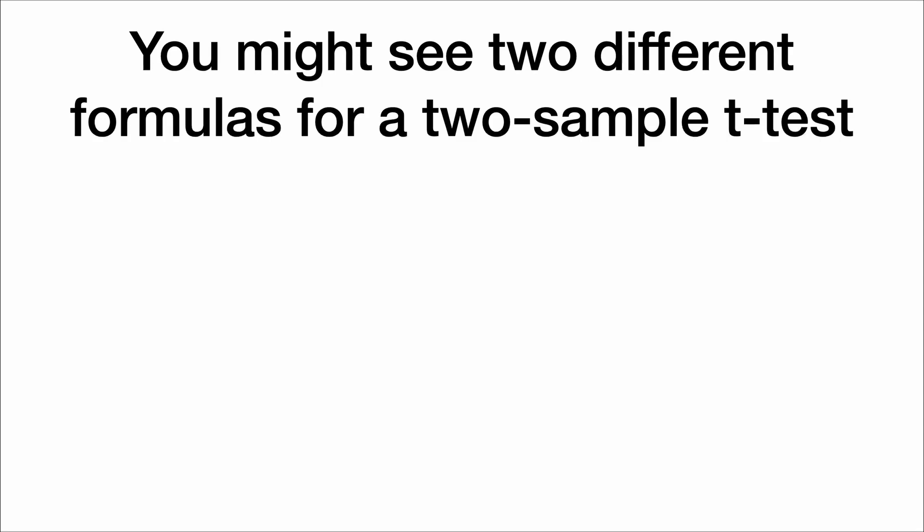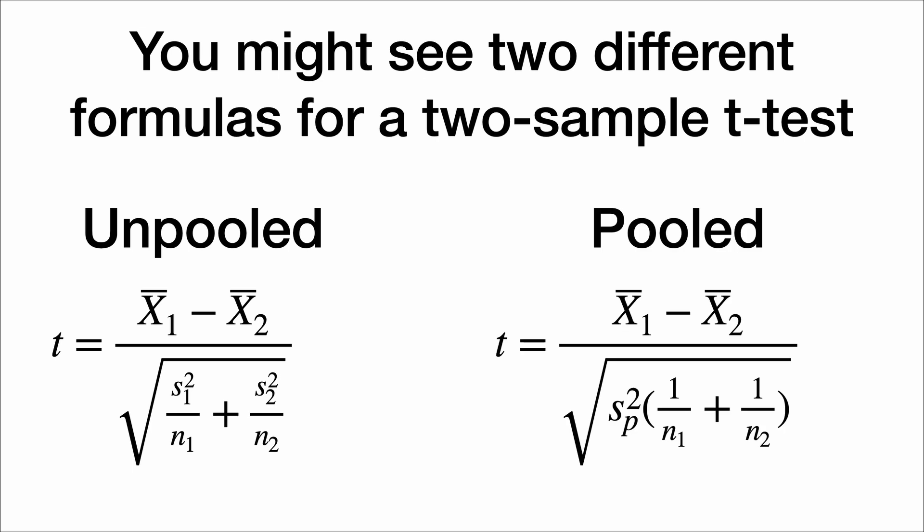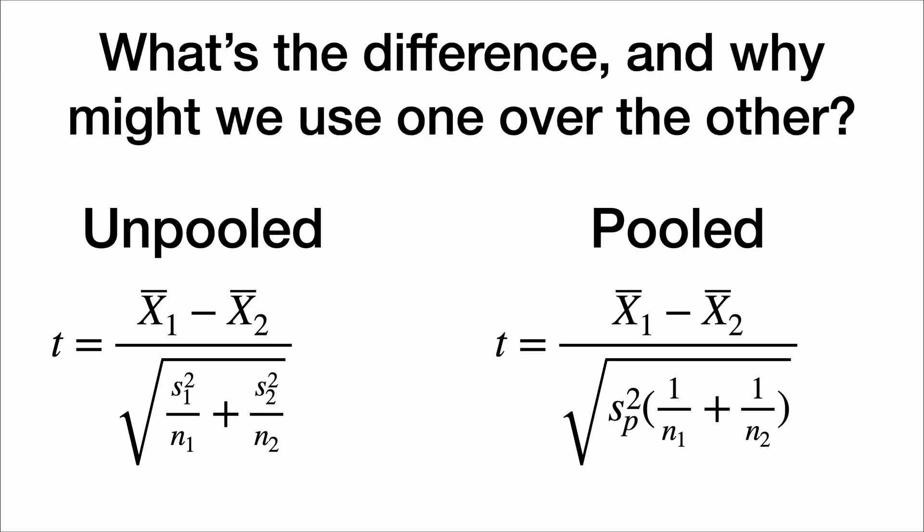You might see two different formulas for a two-sample t-test: the unpooled formula and the pooled formula. What's the difference and why might we use one over the other?